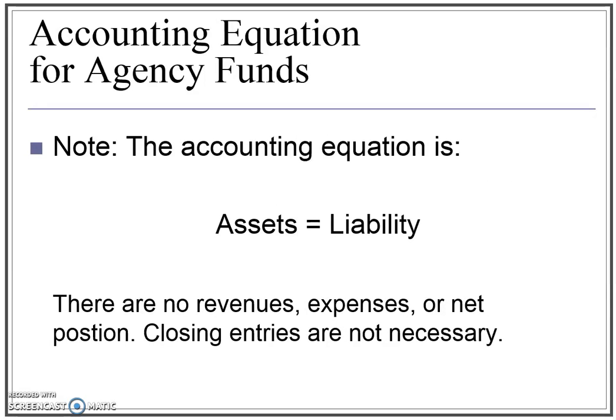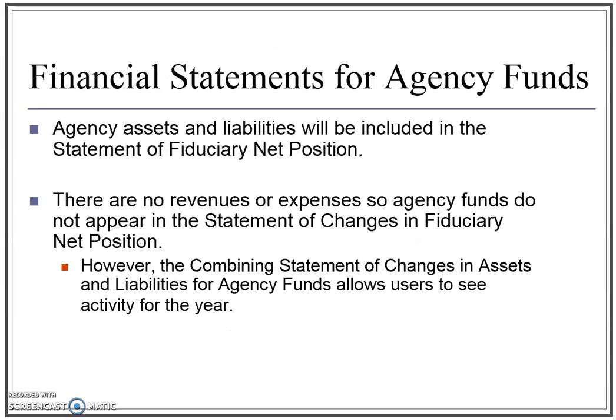It is important to note the equation for an agency fund. Within an agency fund, there are no revenues, there are no expenses, and there is no net position. The total assets accumulated within this agency equals the total amount of debt owed, or the liability. The agency assets and liabilities will be included in the statement of fiduciary net position. There are no revenues or expenses — instead, there are assets equaling total liabilities.